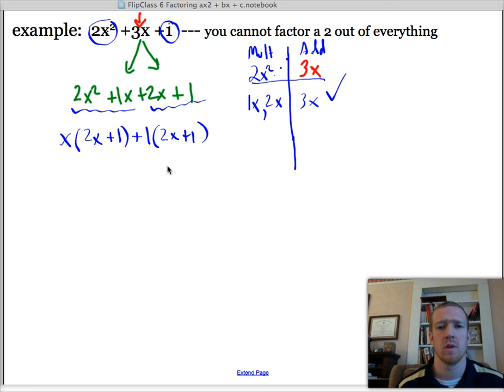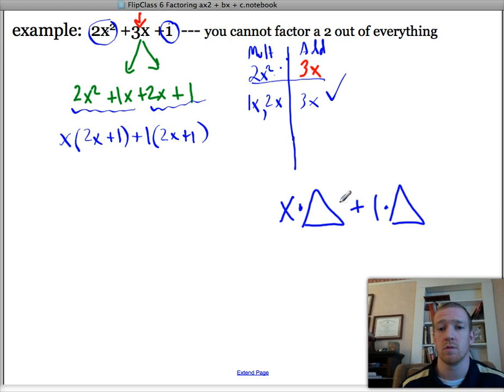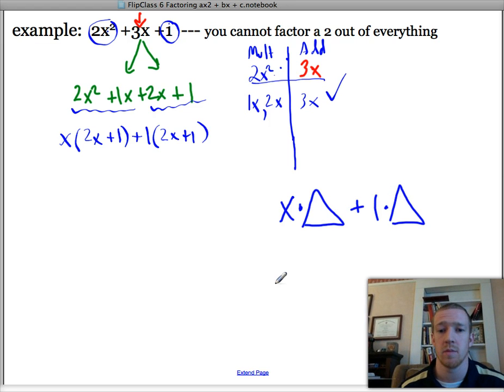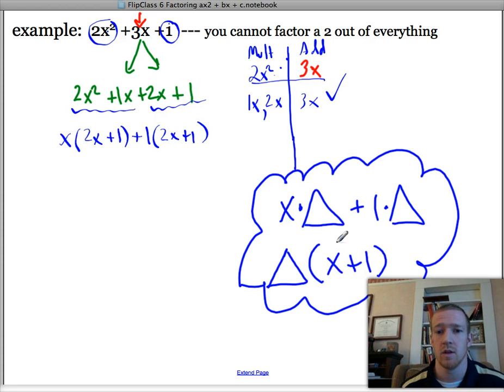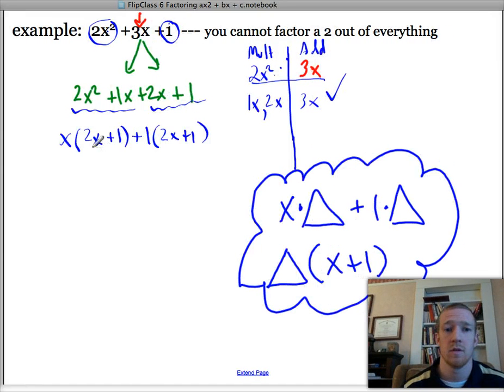Okay. So to exemplify what we're doing here, imagine if I had an x times something. I don't know what it could be anything. It could be x times an x, x times a 1, x times anything, plus a 1 times something. Well, the GCF here is just this triangle. That's what's being multiplied by both, so I can divide it out from both. So that's just kind of the idea here, right? x times something plus 1 times something, we can undistribute it or factor it out.